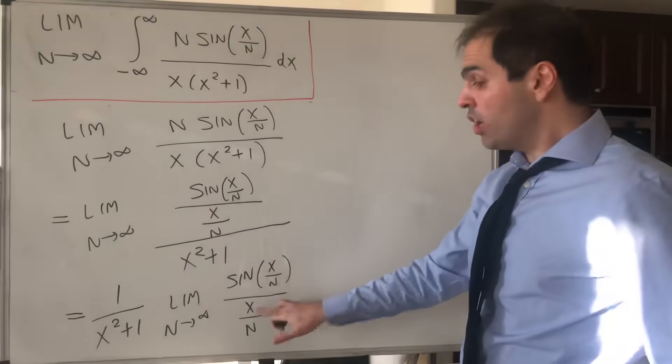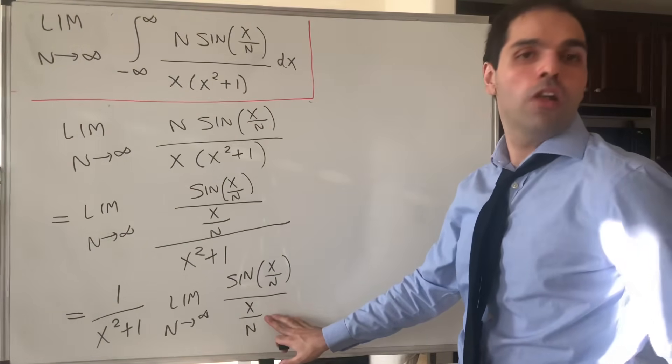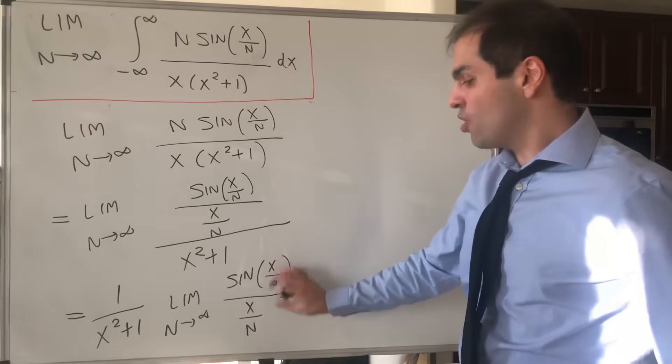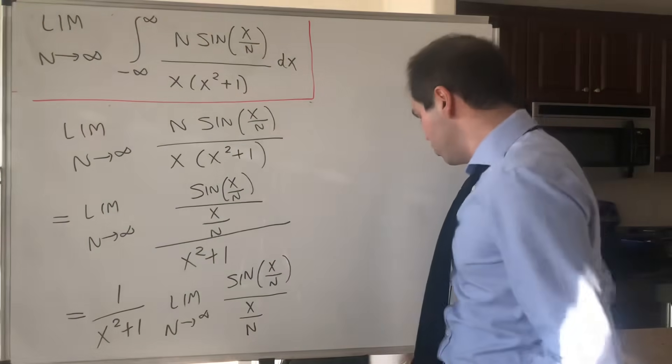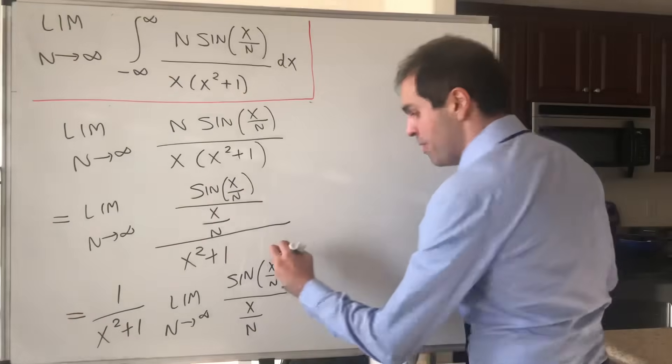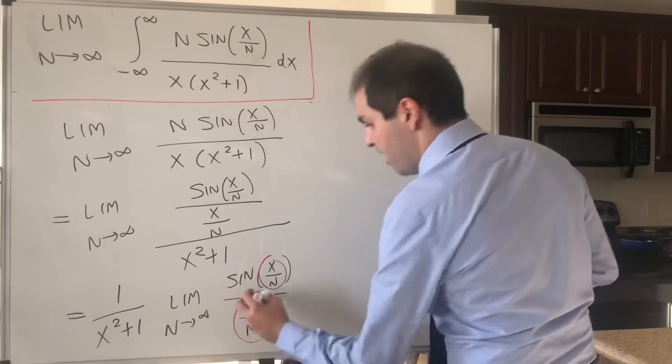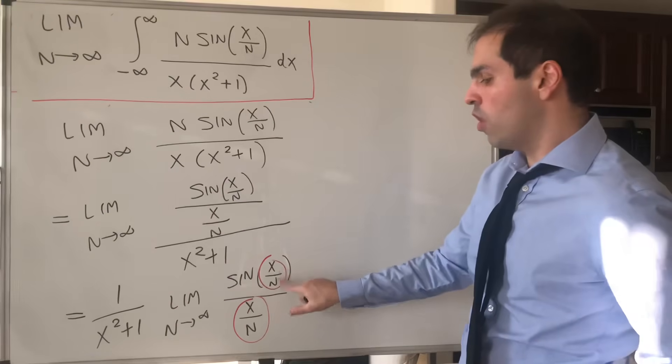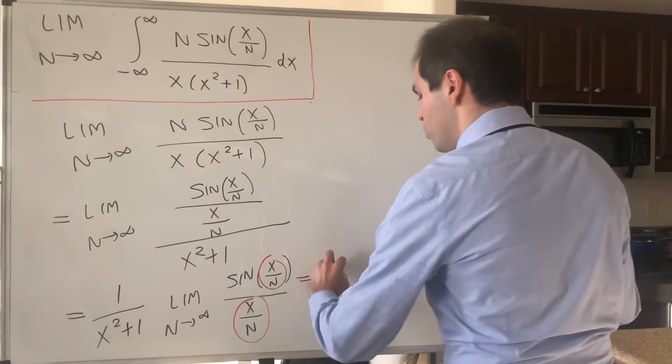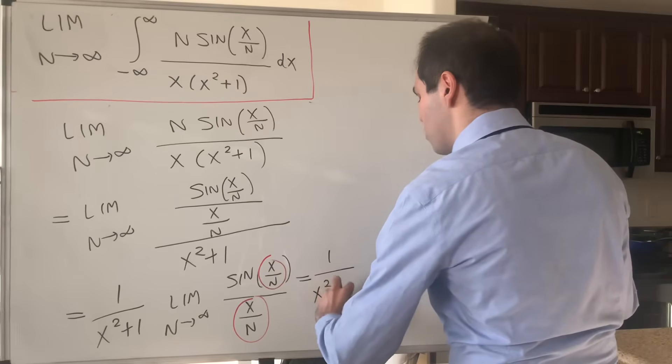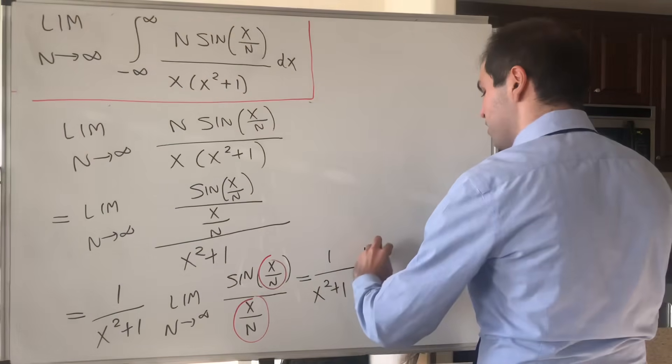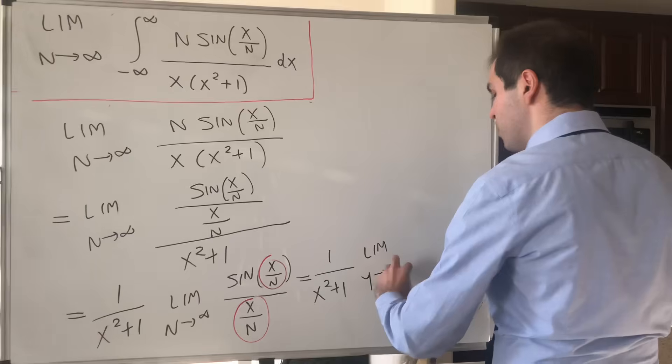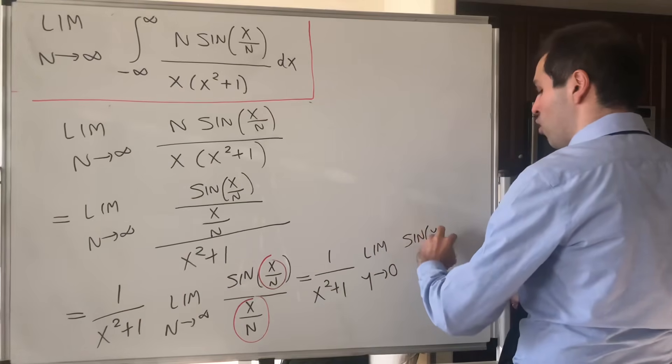Now, no matter how large or small x is, x over n always goes to 0. So this limit is nothing else than the limit as, let's say, y goes to 0 of sine of y over y. So this just becomes 1 over x squared plus 1, and then limit y goes to 0 of sine of y over y.